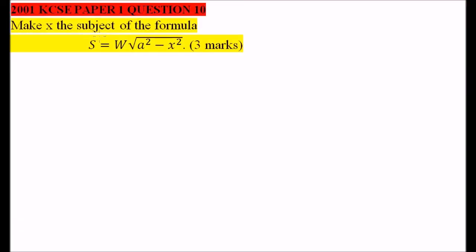This is 2001 KCSE paper 1 question number 10 on formula and variation, and you are supposed to make x the subject of this formula. We are given s equals w square root of a squared minus x squared.